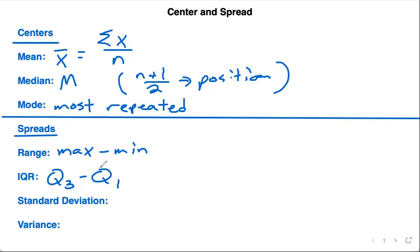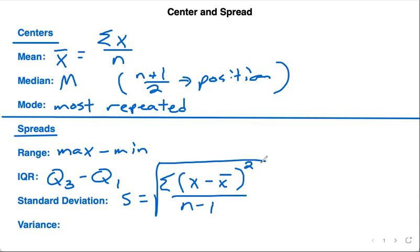Standard deviation, you're going to end up using a calculator for. If you actually want to calculate it by hand, you have to take every single individual value, subtract it from the mean, square them all, sum it, divide by the sample size minus one, and square root.